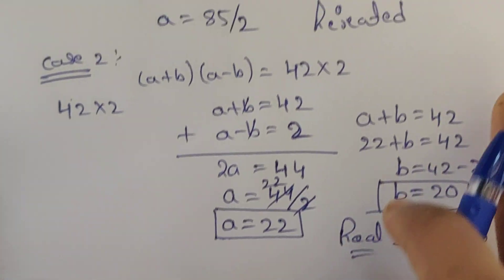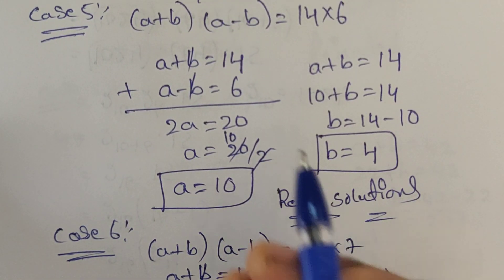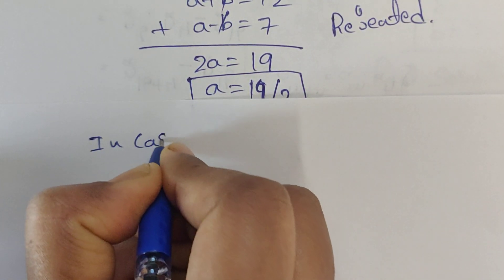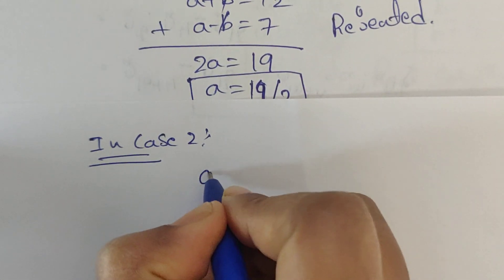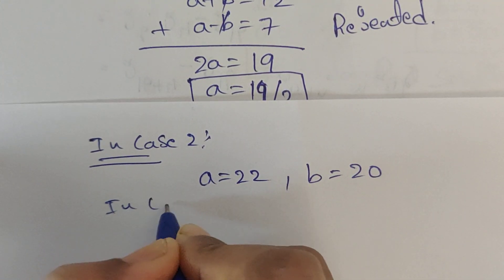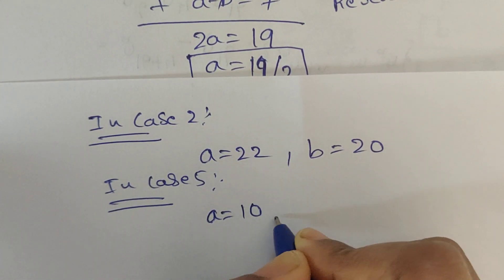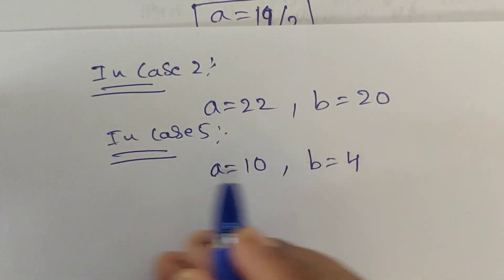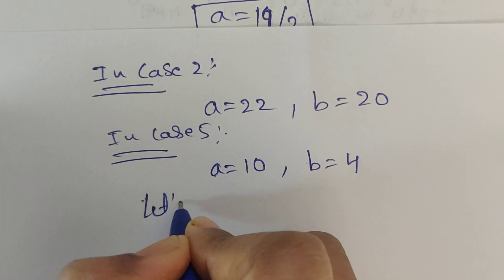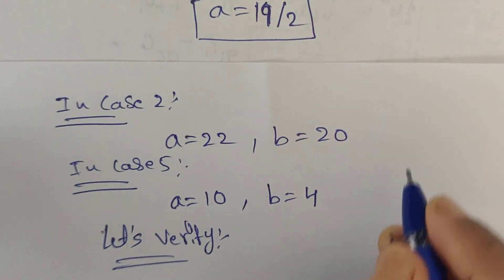So here we got real solutions in Case 2 and Case 5. In Case 2 we got a equals 22 and b equals 20. In Case 5 we got a equals 10 and b equals 4. Let's now verify whether these values are correct.